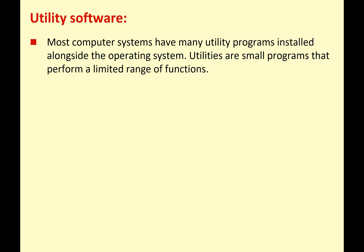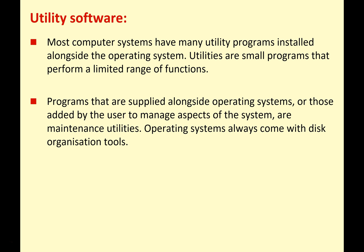Utility software — most computer systems have utility programs installed alongside the operating system. Utilities themselves are small programs that perform a limited range of functions, and they're usually connected to background tasks to keep the system healthy and working. Programs are supplied alongside operating systems, added by the user to manage aspects of the system, or as maintenance utilities.